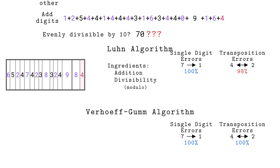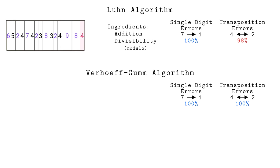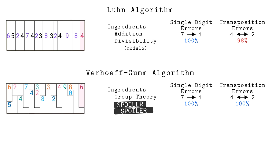In the decades after the Luhn algorithm was published and adopted, two mathematicians independently came up with a better algorithm. The Verhoeff-Gumm algorithm leverages an area of mathematics called group theory to be impervious to all transposition errors. Using the box analogy, it gives the packed digits different shapes to fit together more snugly.